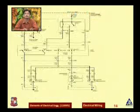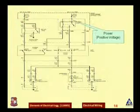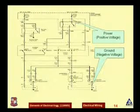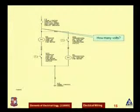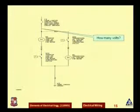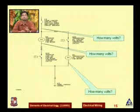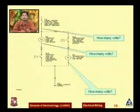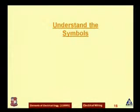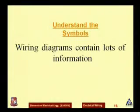Looking at a sample diagram, the positive voltage is at the top and the ground wire is at the negative voltage side. For example, if you want to know how many volts are near a motor in the diagram, and you know the symbolic representation properly, you can determine how many volts will be there without using any equipment. Understanding symbols is the thumb rule of electrical wiring. Wiring diagrams contain a lot of information.